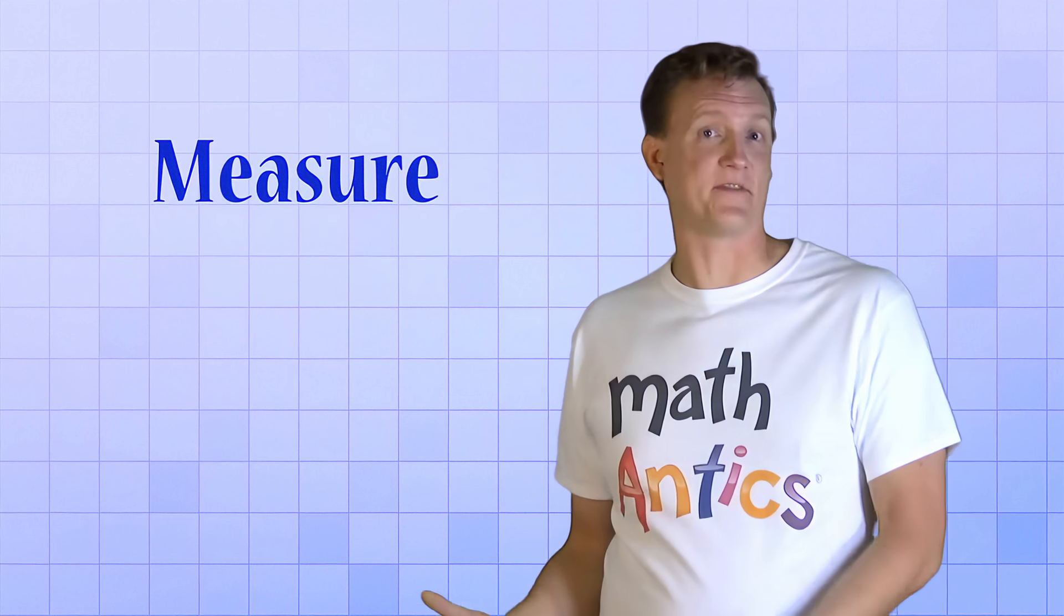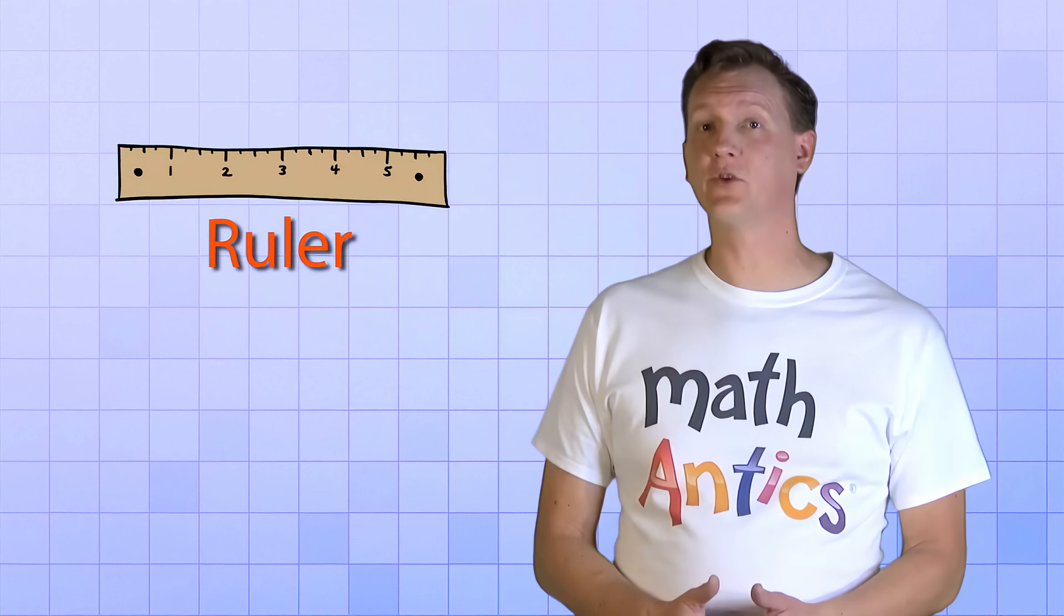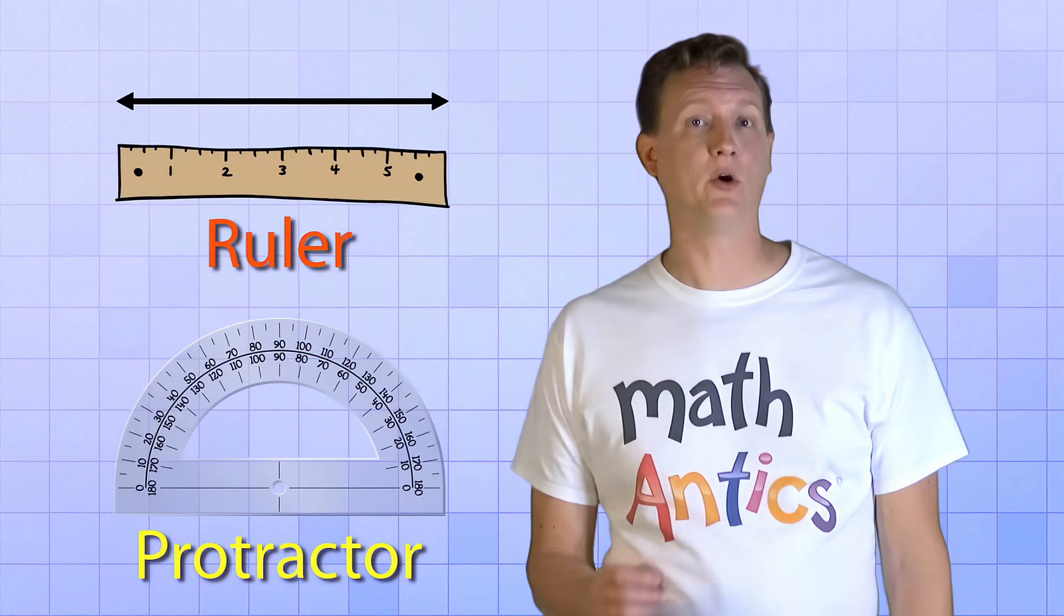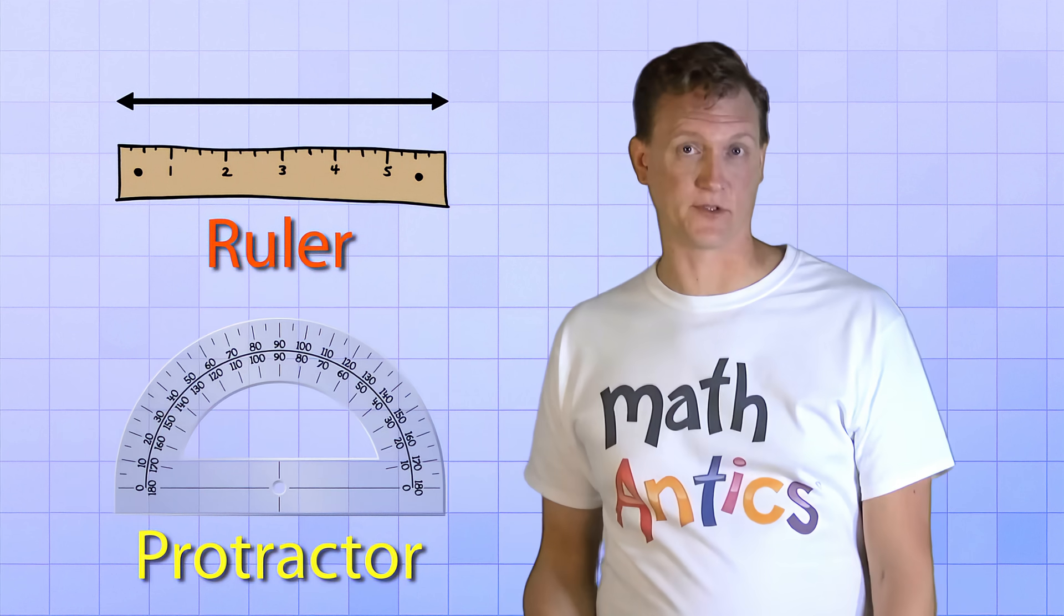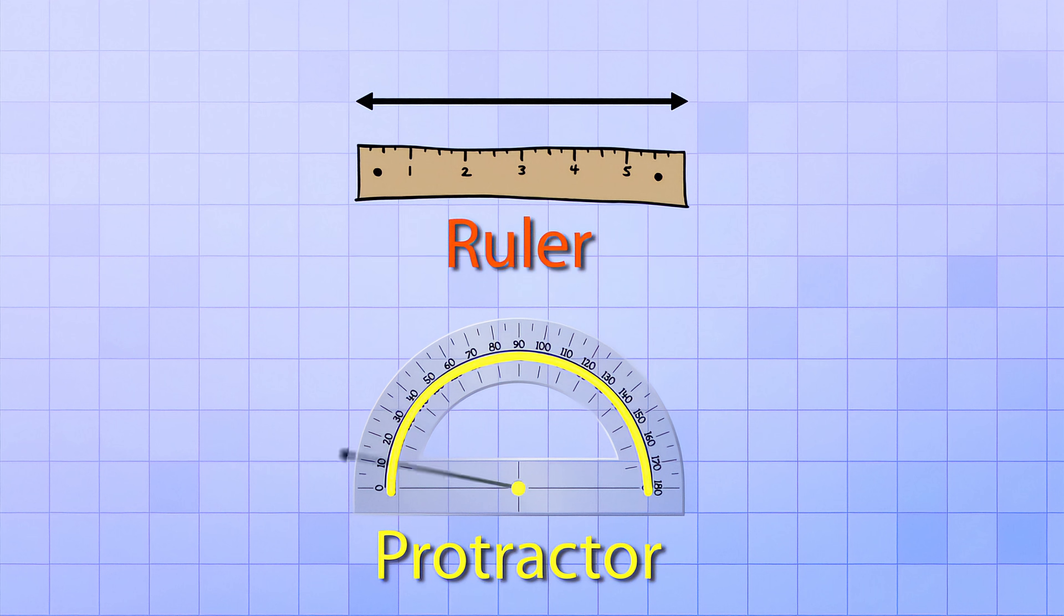Okay, now that you know what degrees are and you've seen how they relate to the size of an angle, we need to learn how to actually measure an angle without this fancy readout that we have here. Just like a ruler can be used to measure the length of a line, a special tool called a protractor can be used to measure angles. A protractor is similar to a ruler, but it's curved into a half circle so that it can measure rotation around an axis point. A protractor also has a straight edge with a hole or a dot in the middle that represents the axis or center of rotation.